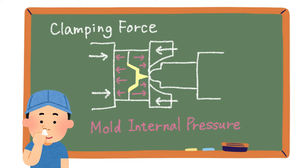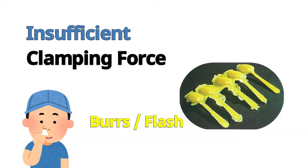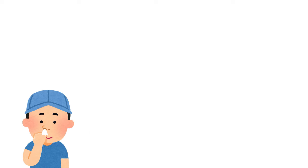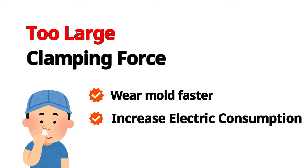If the mold clamping force is small, burrs will occur, so it's necessary to select a molding machine that has bigger mold clamping force than the force that the mold tries to open. On the contrary, it's not good if the clamping force is too big since it would wear the mold and consume a lot of electric power.